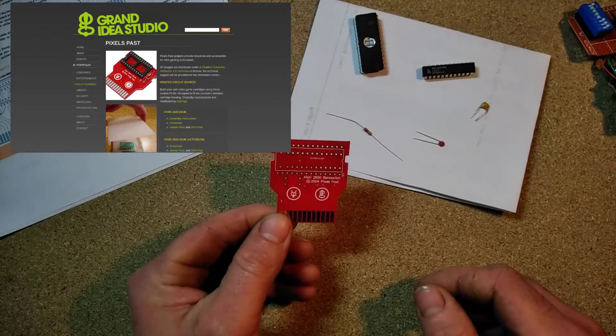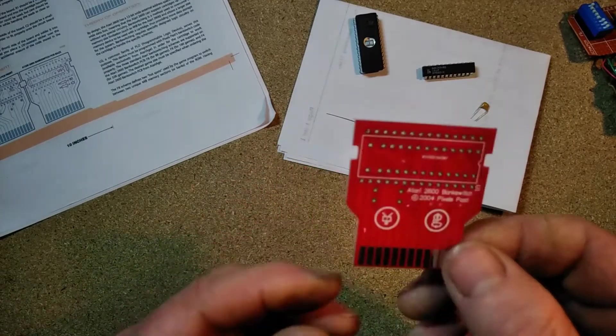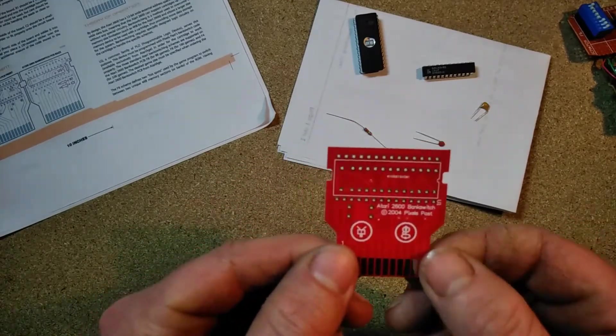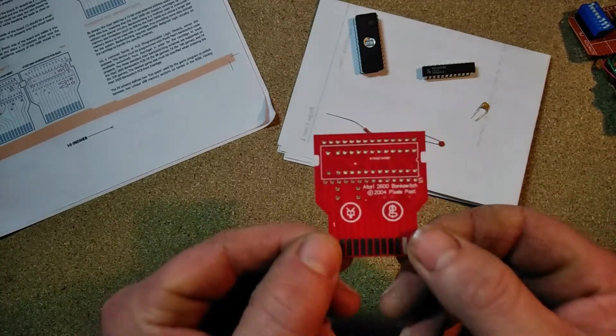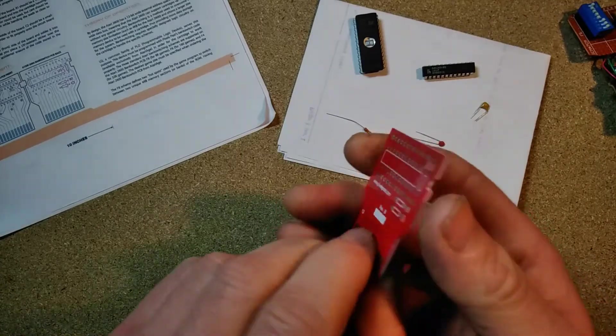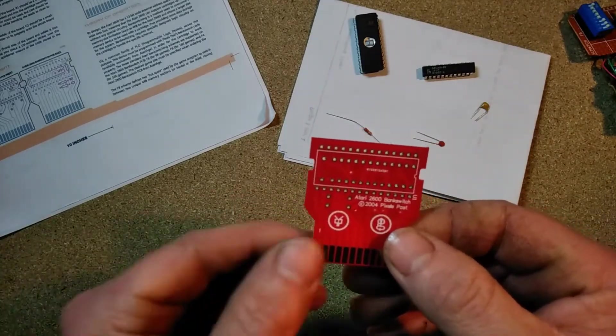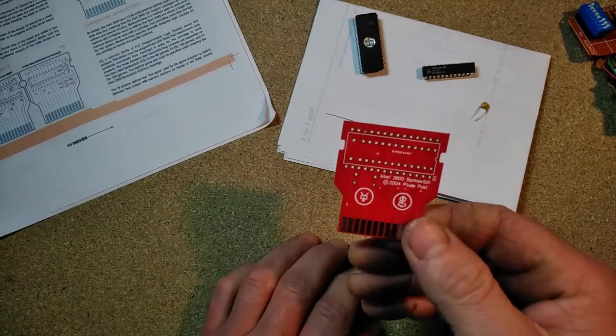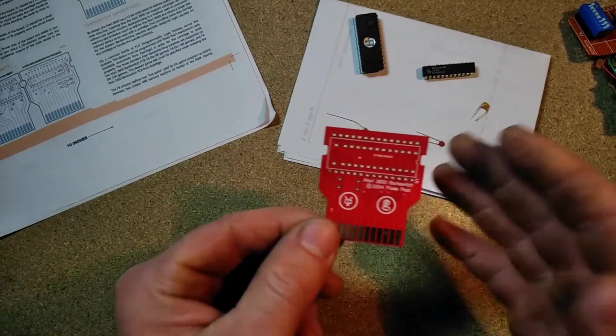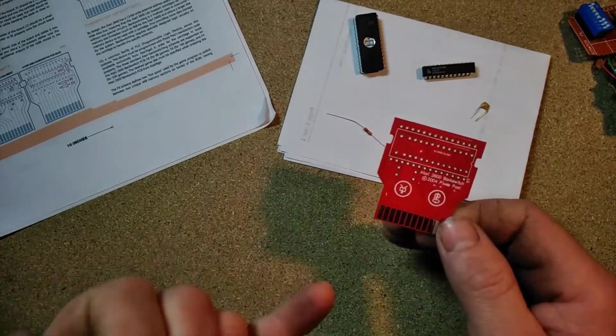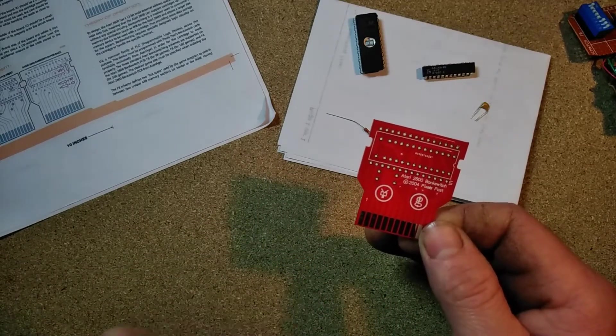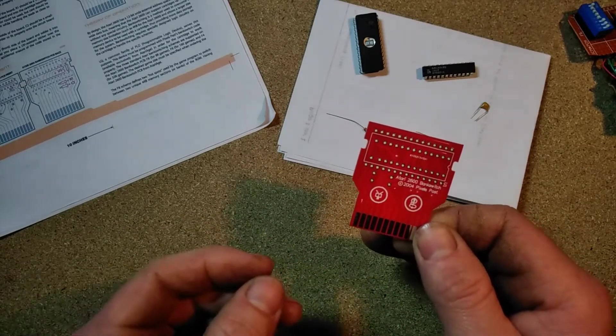This particular one is capable of playing ROMs that are 8 kilobytes, 16 kilobytes, and 32 kilobytes big. I'll put a link to the site. They've got not only for the Atari but also cartridge PCBs for the ColecoVision and for the Atari 400 and 800.